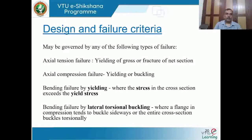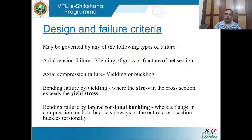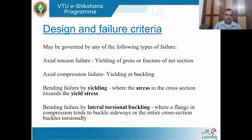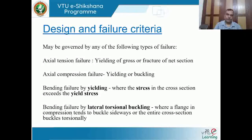Failure criteria may be governed by several types. For a tension member subjected to axial load, the entire cross section can fail by yielding — yielding of the gross section — or a part of the cross section can fail by fracture of the net section. Fracture of the net section generally happens at the connection, whereas along the length the member may fail by yielding. For a compression member subjected to axial compression, the member generally fails by yielding or by buckling: if the slenderness ratio is very large the member fails by buckling; if small, it fails by yielding.